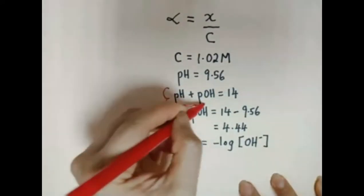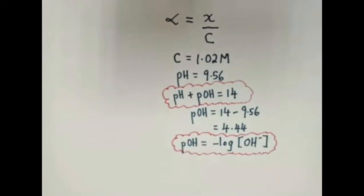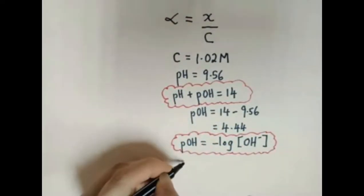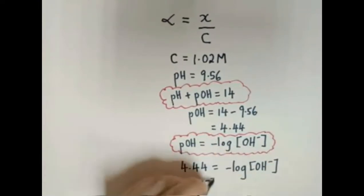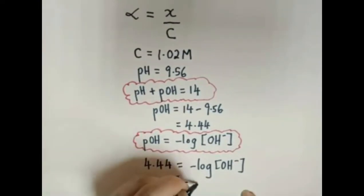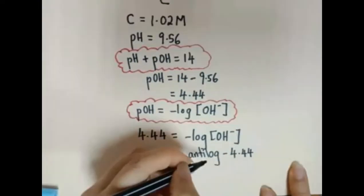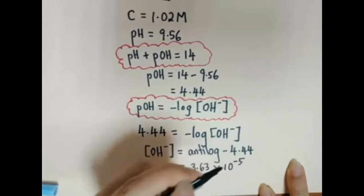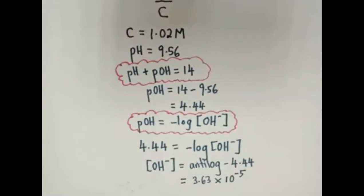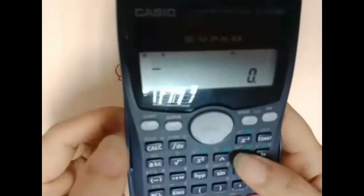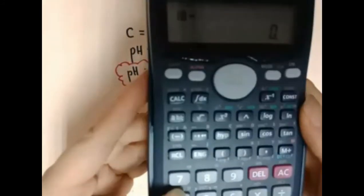As usual, we use the formula pH plus pOH equals 14 in order to find the value of pOH. The concentration of OH⁻ equals 10 to the power of negative 4.44. Let's press the calculator: shift log negative 4.44.